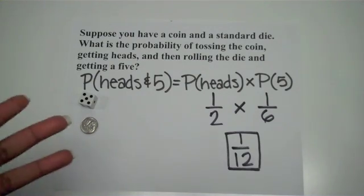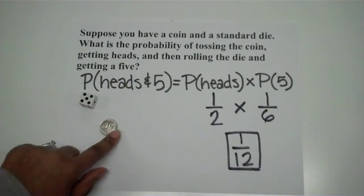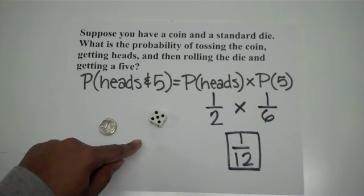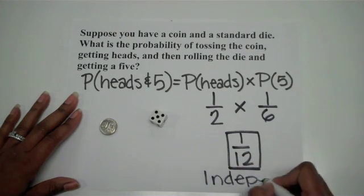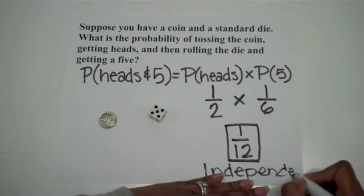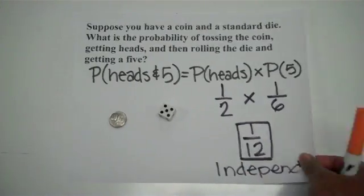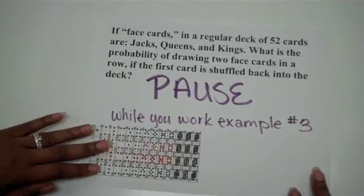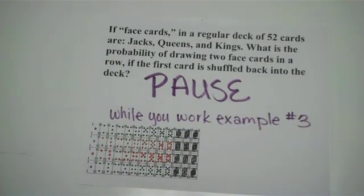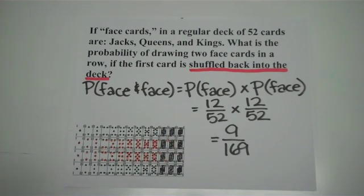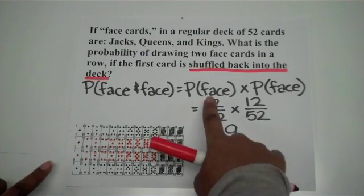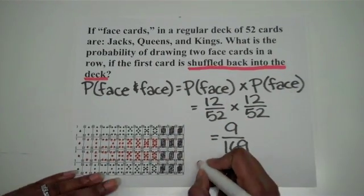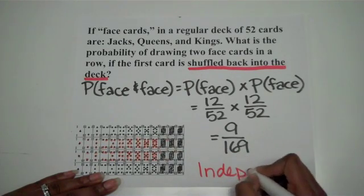Let's make sure we think about this — does what I flip on my coin affect what happens with my die? No, it doesn't. So I know that these are two independent events. Go ahead and pause the video while you work example number three. What's key in this problem is that the first card is shuffled back into the deck. So if I take a card out and put it back in, I still have 52 cards. What happens on the first event has nothing to do with the second event, so you should have identified this as independent events.